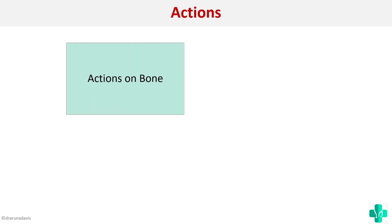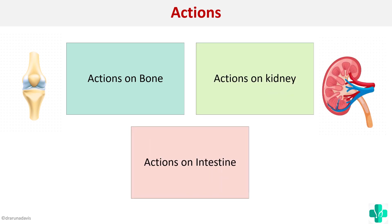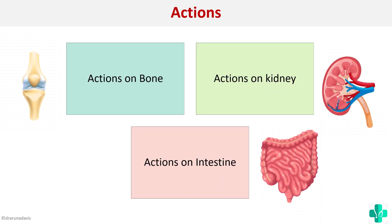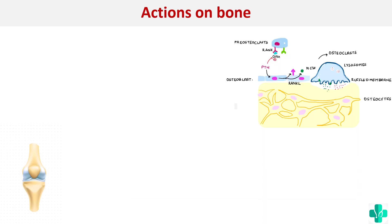Moving on to the major actions of parathormone: the action is primarily on the bone. It also has actions on the kidney as well as the intestine. We will see each one by one, starting with actions on the bone.